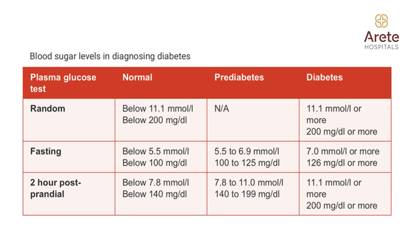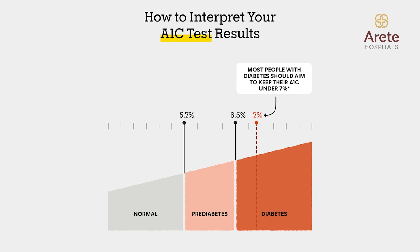Or, if two hours post-glucose challenge test blood sugar is more than 200 mg per deciliter, then we can label the patient as diabetes. Similarly, the three-month blood sugar average HbA1c, if it is more than 6.5%, then we can label the patient as diabetes.